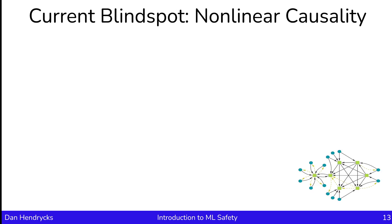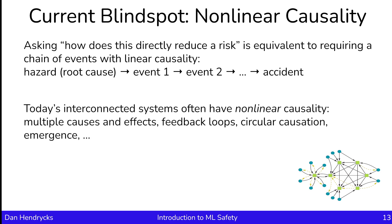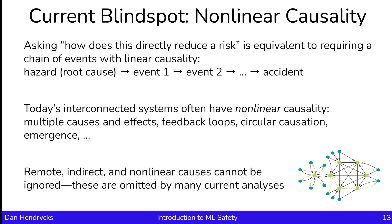A current blind spot of much safety discussion omits nonlinear causality. Asking how something directly reduces a risk requires a chain of events with linear causality. But today's interconnected systems have nonlinear causality — multiple consequences and effects, feedback loops, circular causation, emergence, butterfly effects, and microscale and macroscale dynamics. These remote, indirect, diffuse, and nonlinear causes cannot be ignored, though they are ignored by many current safety analyses and discussions.